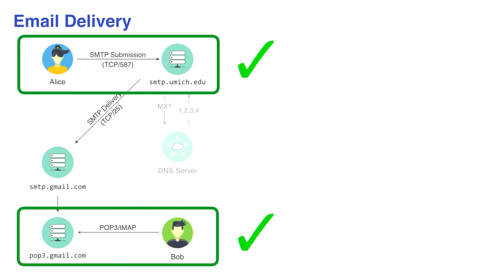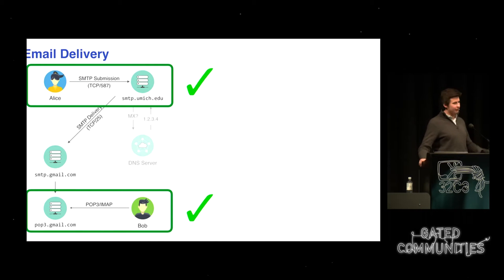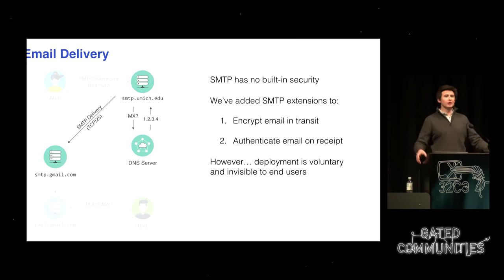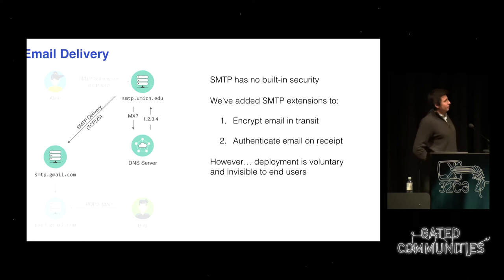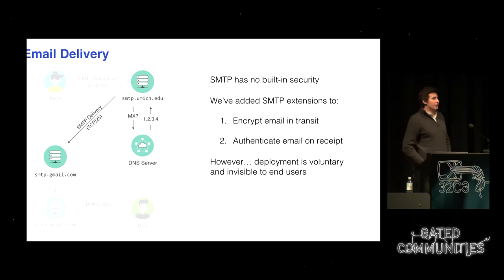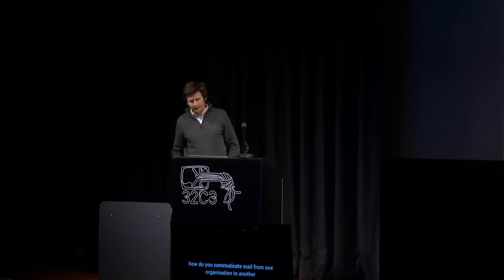The first and last step in this process use TLS very much the way HTTP uses TLS for HTTPS — your client connects, verifies a certificate, and you can say I'm only going to connect over TLS. What I want to focus on today is the middle part — how you communicate mail from one organization to the next. By default, as SMTP was originally conceived, there was absolutely no security built in. Everything was sent in clear text, and you trusted every email you received came from the original sender.